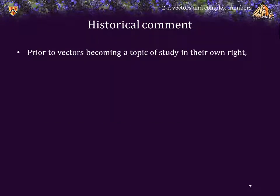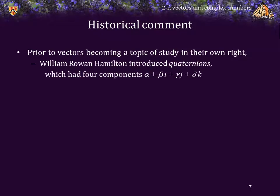Just as a historical comment, as you may be interested, vectors only came to prominence in the late 1800s. Prior to that, William Hamilton actually introduced something called quaternions, and quaternions had four components. So, they were a generalization of complex numbers.